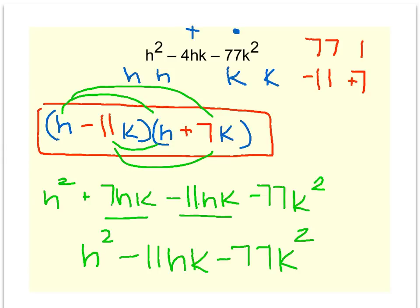One mistake. 7 minus 11 is not negative 11, it's negative 4. So that does get me back to the beginning, so I know my answer is correct.